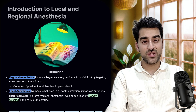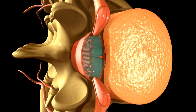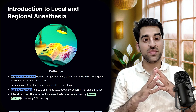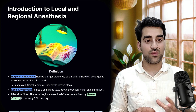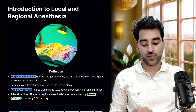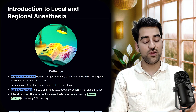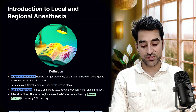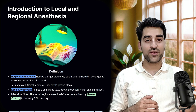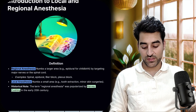Regional anesthesia numbs a large area by targeting major nerves or the spinal cord. Examples include spinal, epidural, Bier block, and plexus blocks. Local anesthesia numbs a small area — for example, for tooth extraction or minor skin procedures. The term 'regional anesthesia' was popularized by Harvey Cushing in the 20th century.